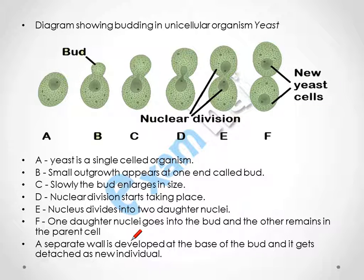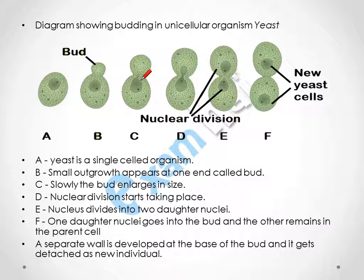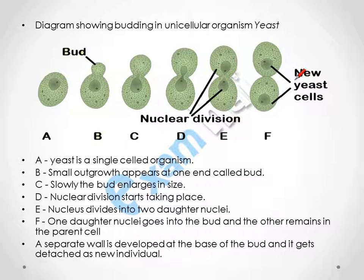Next, this diagram shows bud formation in yeast. Yeast is a unicellular organism with only a single cell. When the bud starts developing, the nucleus starts dividing into two. After division, one of the nuclei goes into the bud and the other remains in the parent cell, and likewise the bud develops into a new yeast cell.